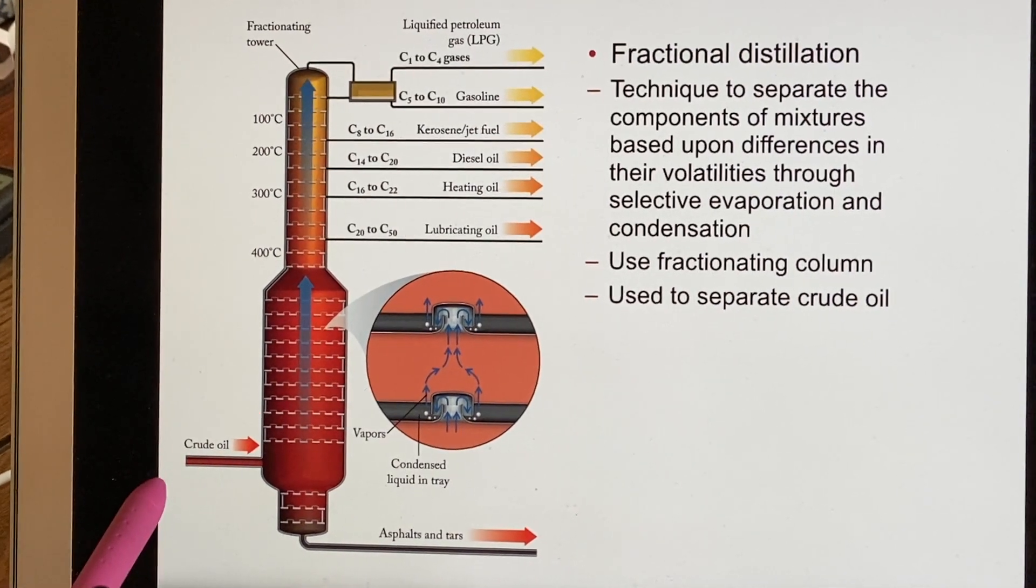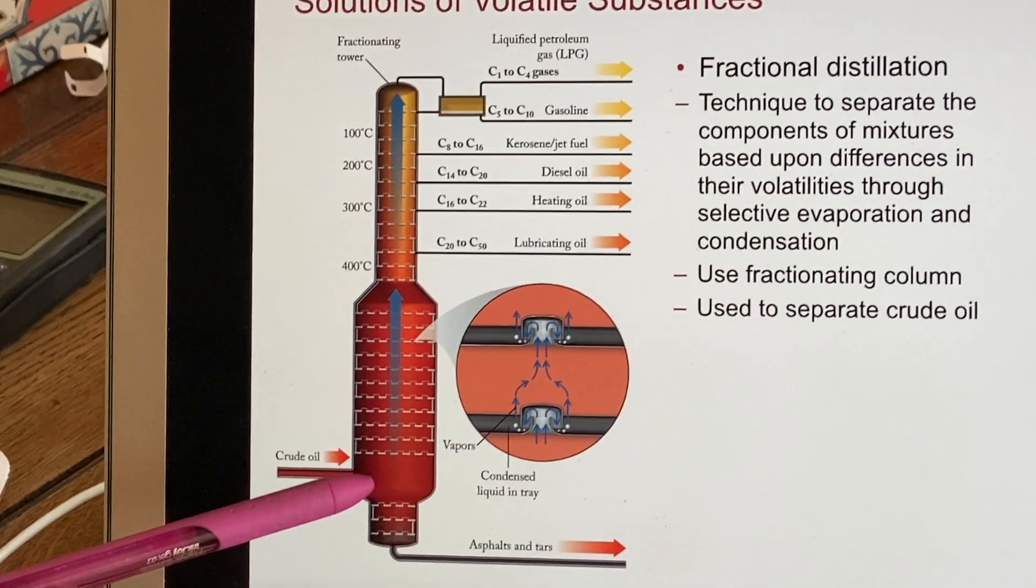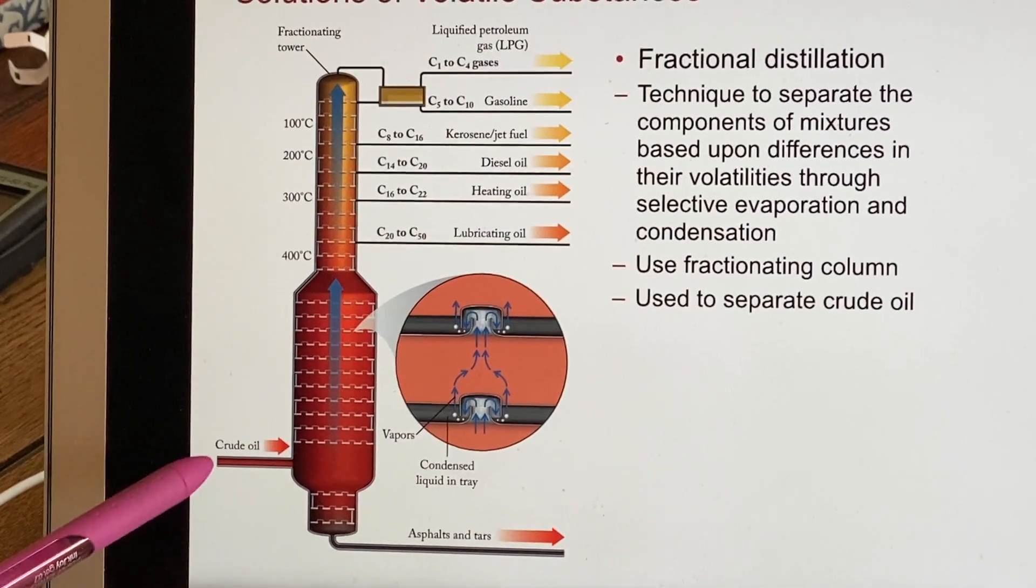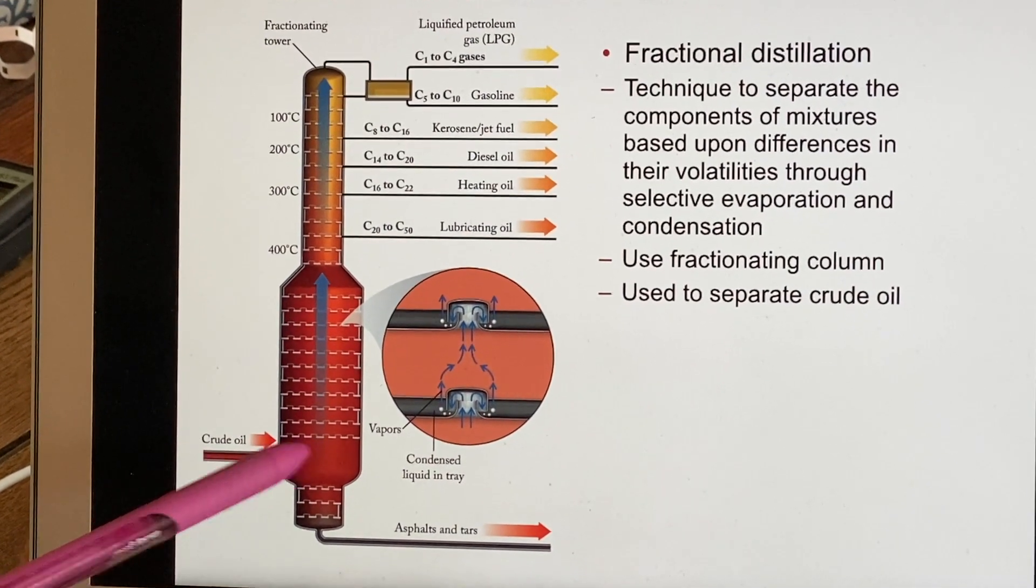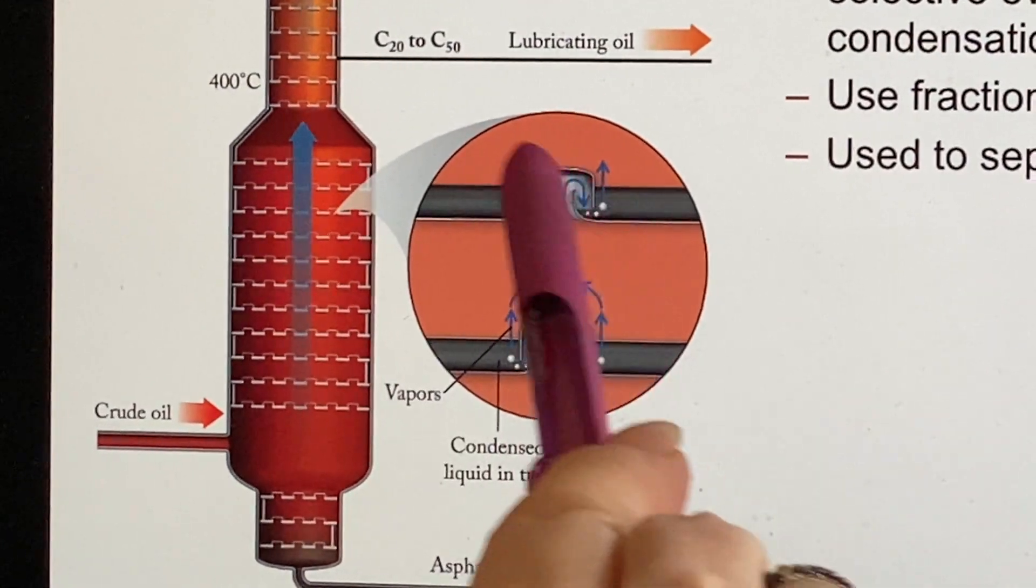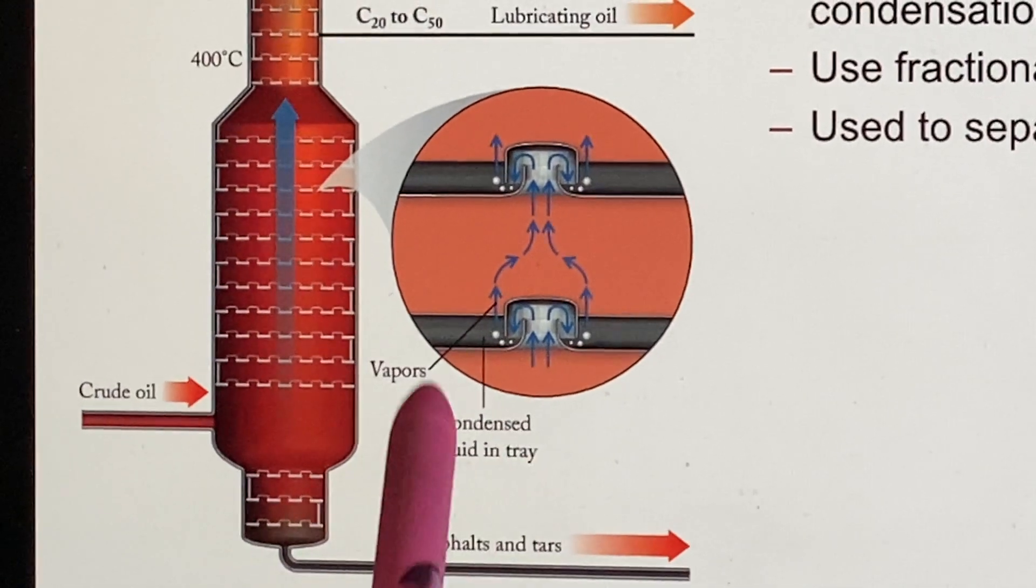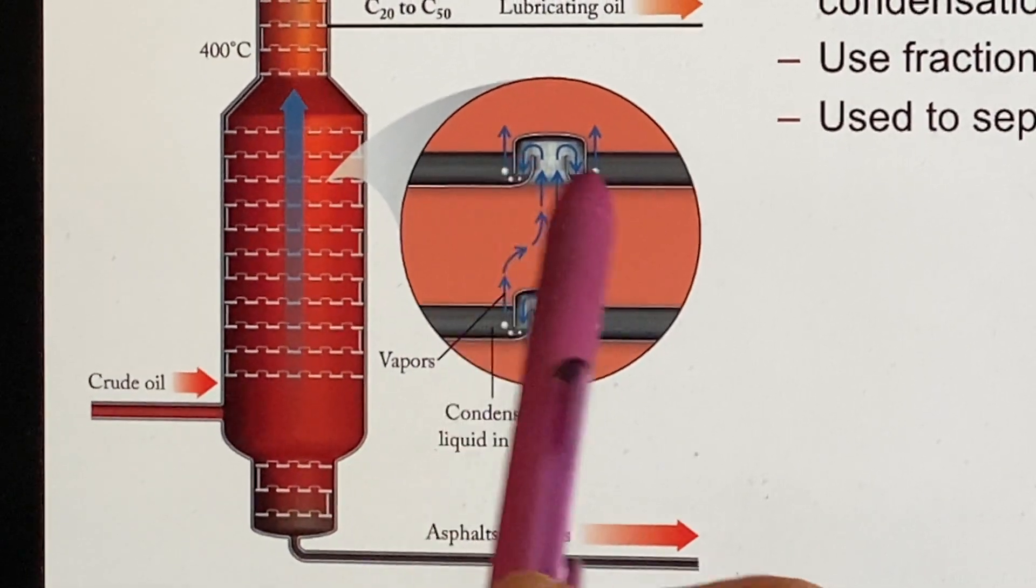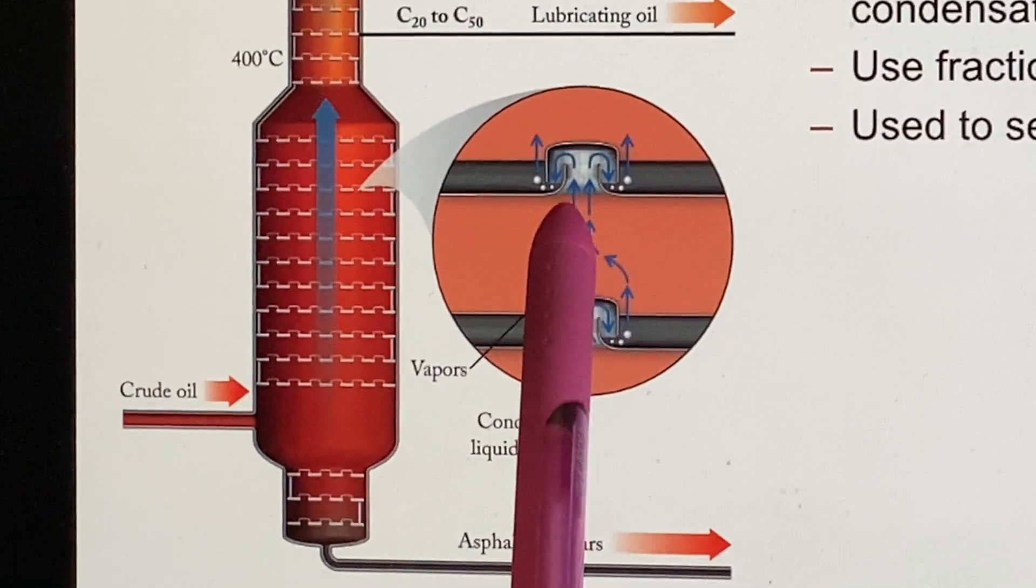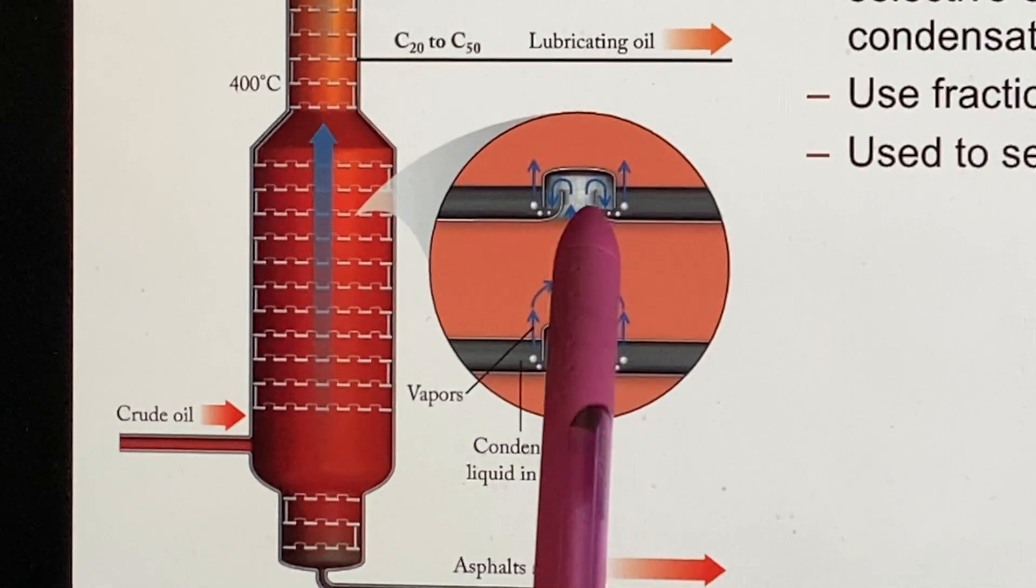A fractionating tower has a lot of heat down here that makes things into vapors that were originally liquids. If they're vapors, they can rise. We have this inset to show you what is going on. As it rises through the tower, there are trays with little baffles in them so that the vapor can get into the baffle, then it will cool down and form a liquid.